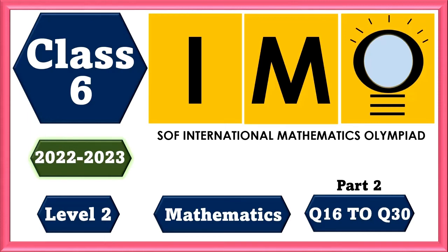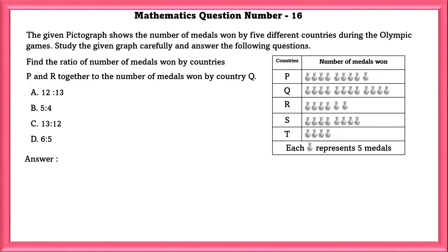Class 6 IMO Level 2 Mathematics Question Number 16. The given pictograph shows the number of medals won by five different countries during the Olympic Games. Study the given graph carefully and answer the following questions. Find the ratio of number of medals won by countries P and R together to the number of medals won by Q.